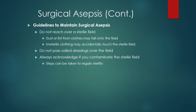Always acknowledge if you contaminate the sterile field — this is probably one of the most important rules. It's easy to do these things accidentally, and it can be embarrassing, but the physician will think far less of you if you contaminate the field and say nothing and are later found out. If you or the physician contaminate the field, say something so you can take steps to reset and regain sterility. Think about what you would want done for yourself or your loved ones.